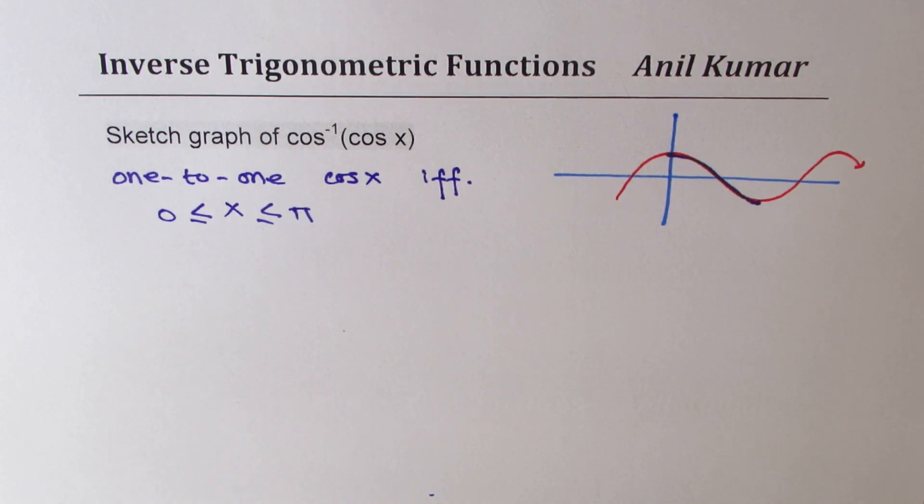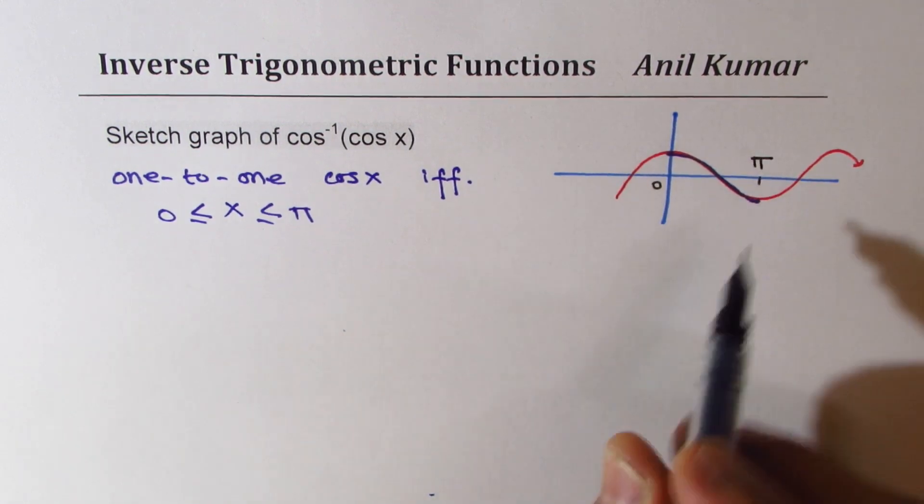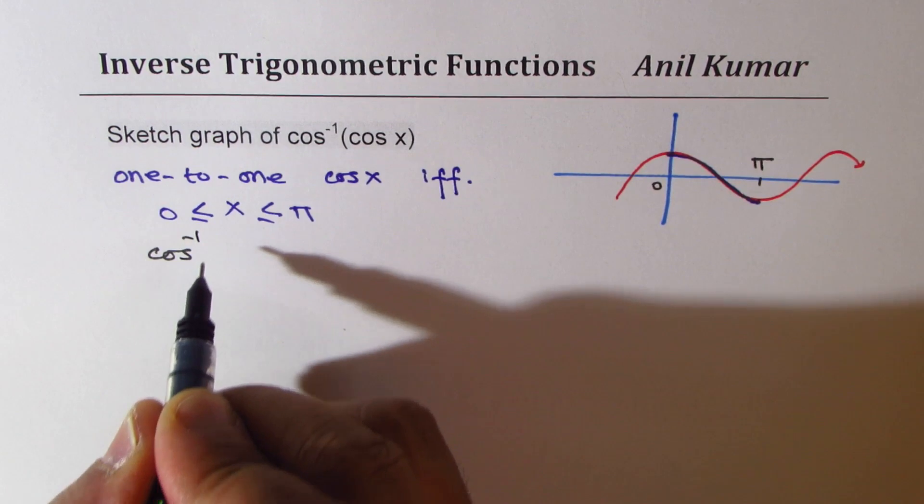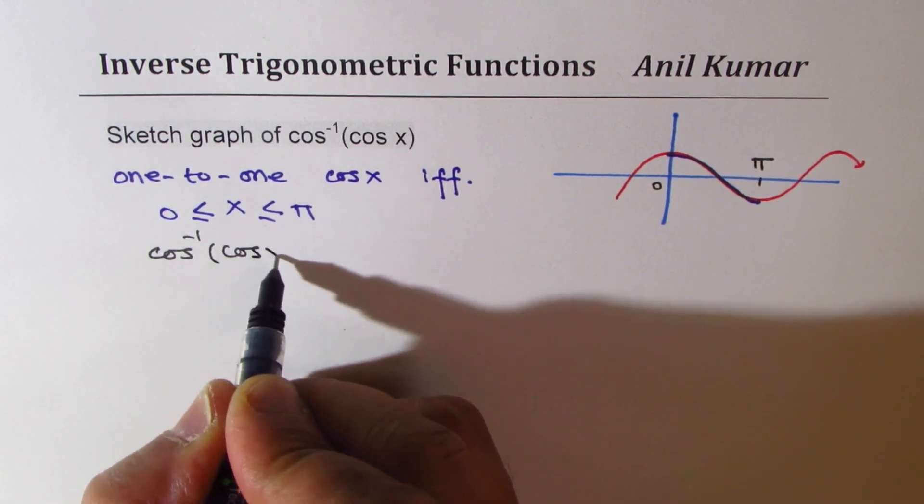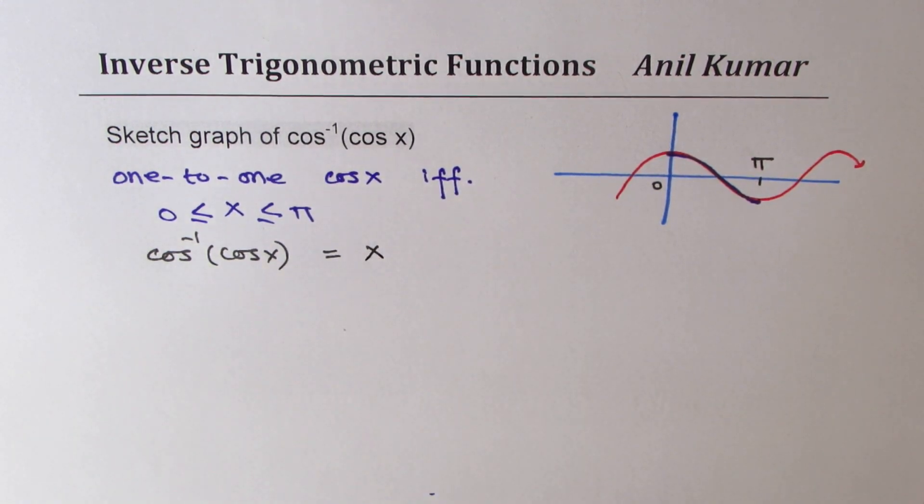The standard method is to restrict the domain of cosine function from 0 to pi. Within this interval, cos inverse of cos x, since it is a 1 to 1 function, will be equal to x.